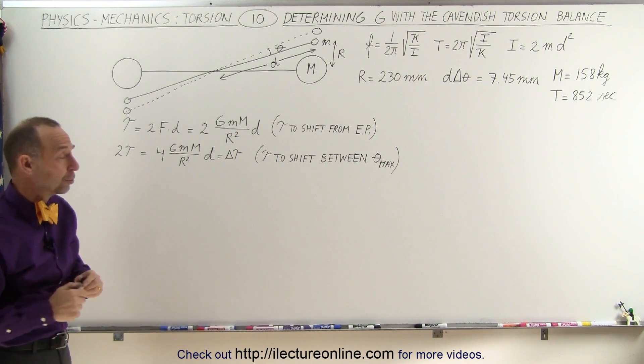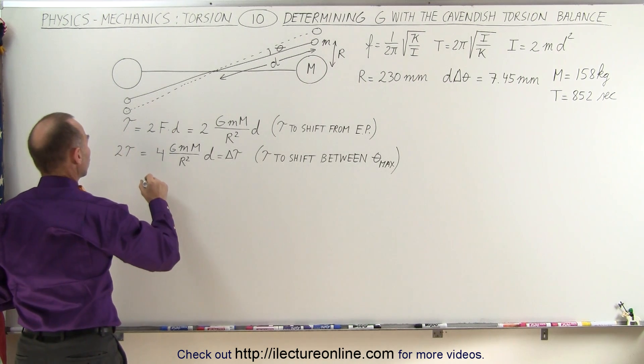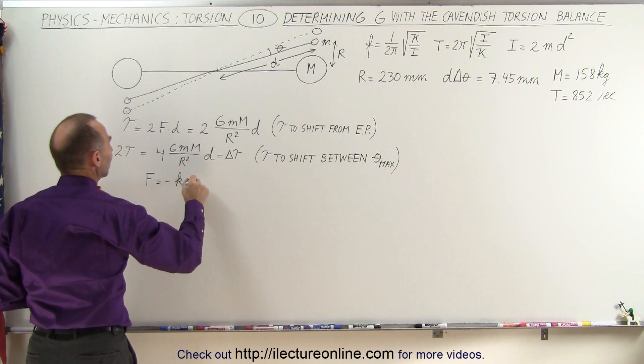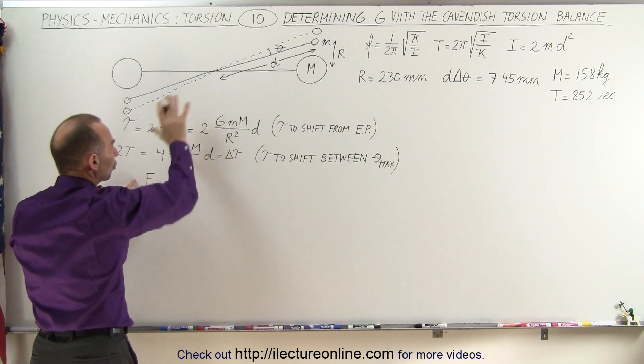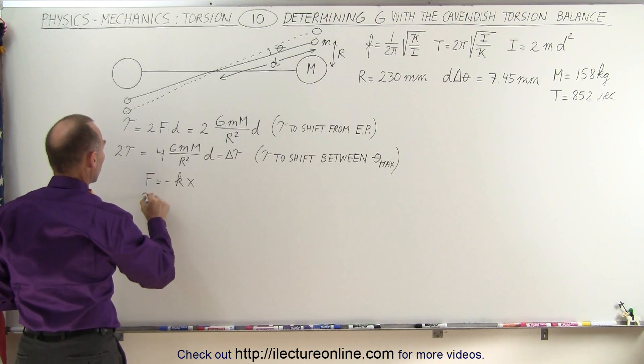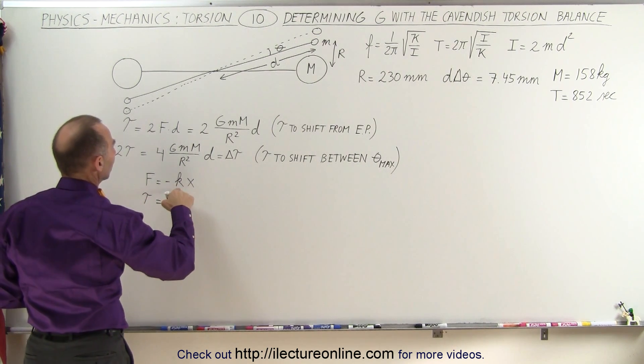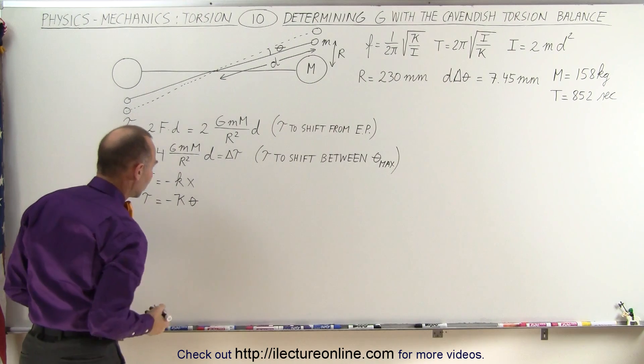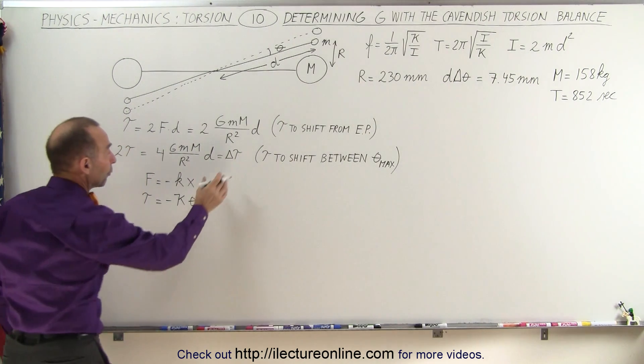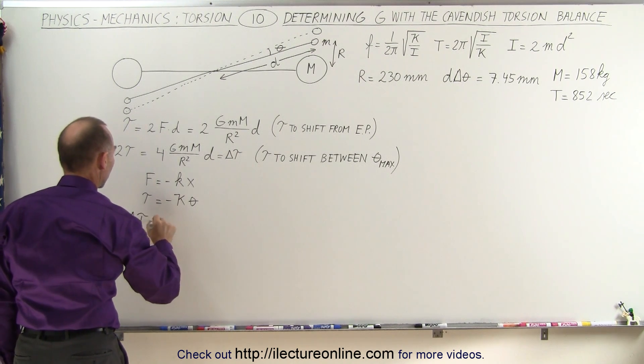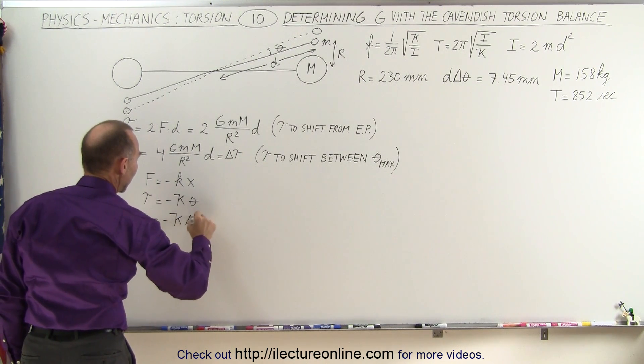So that would give us the delta T required to shift between the maximum displacements. Now next what we're going to do is start with this basic equation in linear motion, that the force on the spring is equal to minus K times X. And when we translate that to torsional motion, we have the torque is equal to minus, instead of K we have Kappa, and instead of X we're going to have the angle theta, the displacement in the angle.